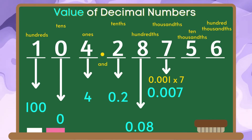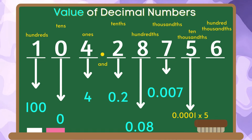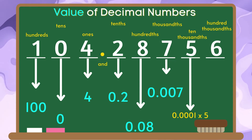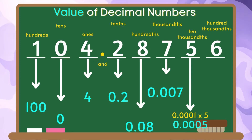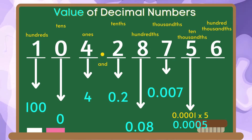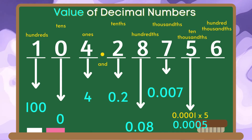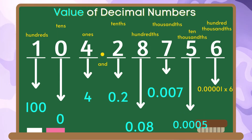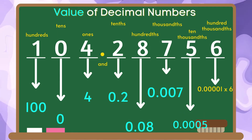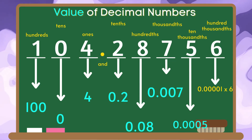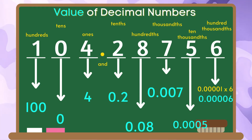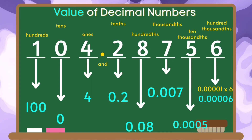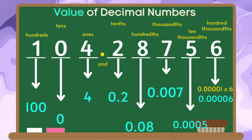For the value of the digit five, since it is in the ten thousandths place value, we are going to multiply five by one ten thousandth and the product is five ten thousandths. Therefore, the value of the digit five is five ten thousandths. For the digit six, since it is in the hundred thousandths place value, we are going to multiply six by one hundred thousandth and the product is six hundred thousandths. Therefore, the value of the digit six is six hundred thousandths.